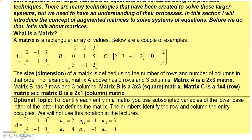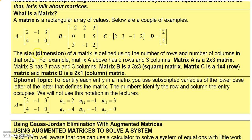In most cases the entries would be numbers, but they could be other elements. Here are a few examples: this matrix has two rows by three columns; this matrix is a square matrix because it has three rows by three columns; and this is a row matrix — it has one row by four columns.